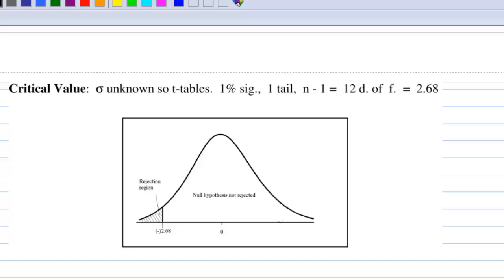We will decide where is the critical region. Sigma is unknown and n equals 13, which is small because it is less than 30. So we must use t-tables instead of standard normal distribution table.